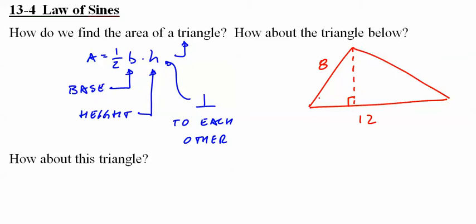Let's imagine this angle was 42 degrees. We can use that angle and SOHCAHTOA to find the height. Sine of 42 equals h over 8, therefore h equals 8 times sine of 42 degrees.